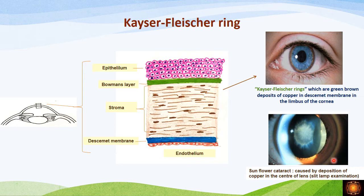The next important organ affected is the eye. Copper deposits in Descemet's membrane. The layers of the cornea from superficial to deep are: stratified epithelium, Bowman's layer, stroma, Descemet's membrane, and endothelium. Copper deposited in Descemet's membrane near the limbus appears as a green-brown ring — this is called Kayser-Fleischer rings. The patient will also develop sunflower cataract due to copper deposition in the center of the lens, visible on slit lamp examination.